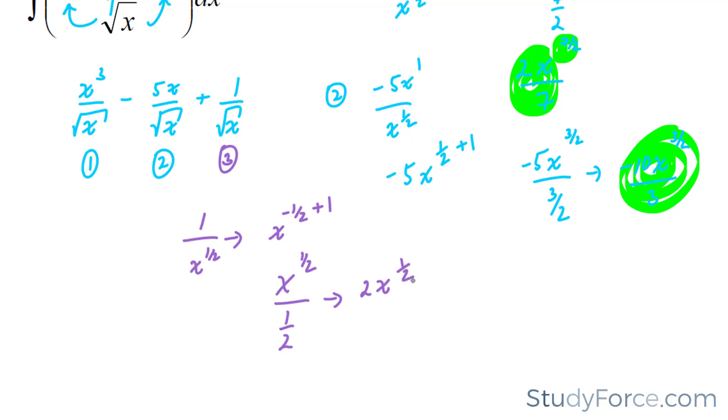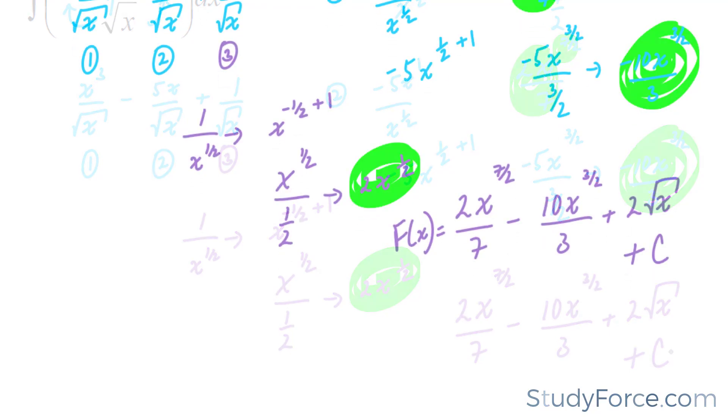So I'm going to put all three of these terms, these antiderivatives together, where I have 2x to the power of 7 over 2 square root of x. Don't forget, the plus c. And so there you have it, two examples on how to find the indefinite integral.